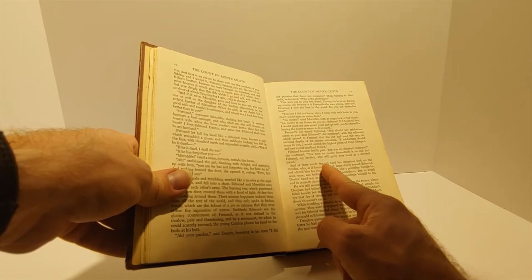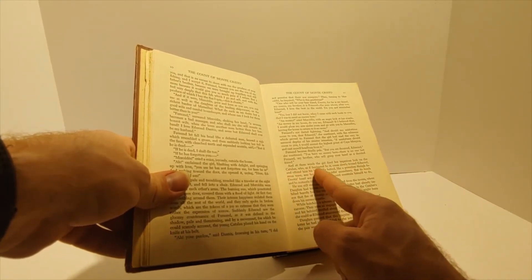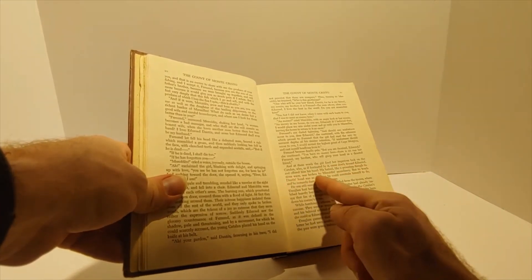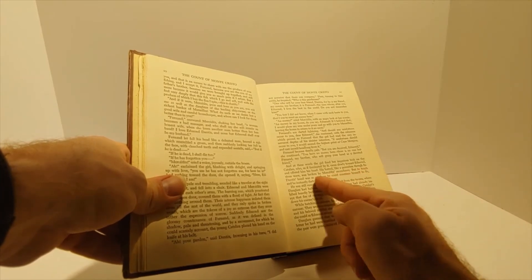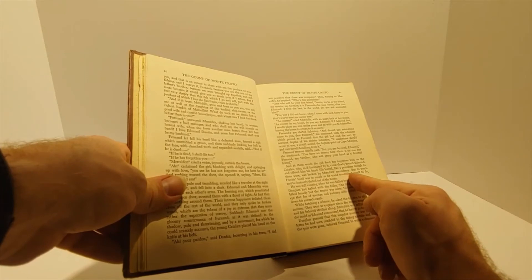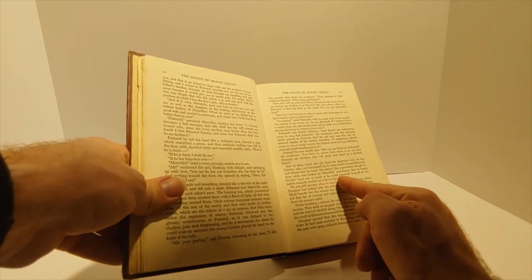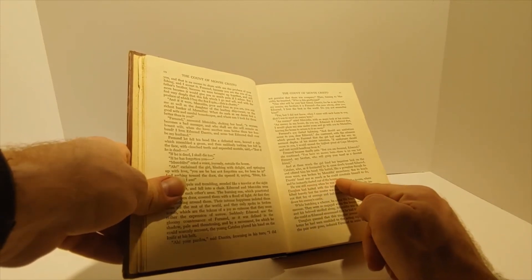And at these words, the girl fixed her imperious look on the Catalan, who, as if fixated by it, came slowly towards Edmond and offered him his hand. His hatred, like a powerless though furious wave, was broken by Mercedes' ascendancy. But to touch Dante's hand was as much as he could constrain himself to do, and he instantly darted out of the house.